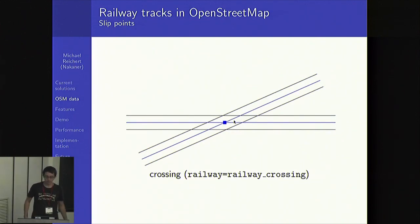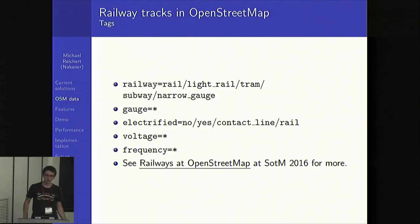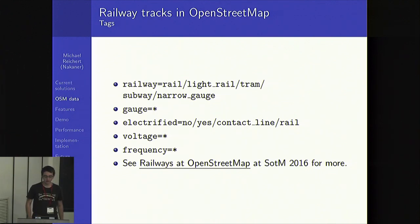Railway crossings are easier to map. They are just two tracks sharing a node with the tag railway=railway_crossing. This is almost all that's important for the routing. There are also tags for the railway tracks: the railway key is the most important, giving information on which type of railway we have — normal rail, light rail, tram, etc. The gauge tag gives the distance between the rails. Other tags indicate if the track is electrified, which type of electrification is available, the voltage, and the frequency. I've given a more detailed talk about this at SotM in Brussels — check out the video on YouTube if you're interested.